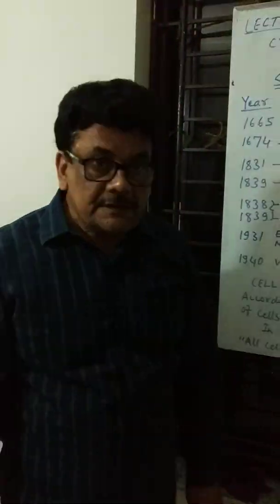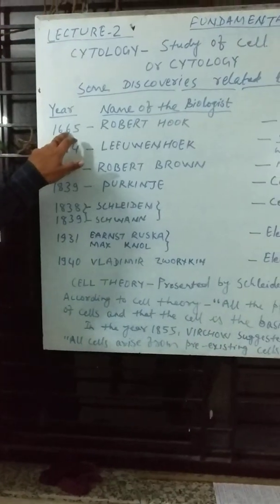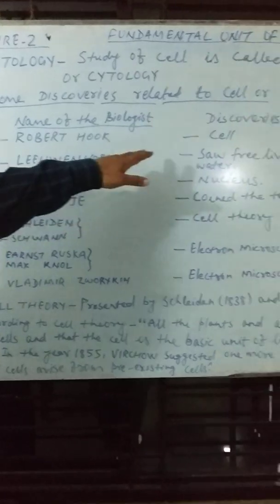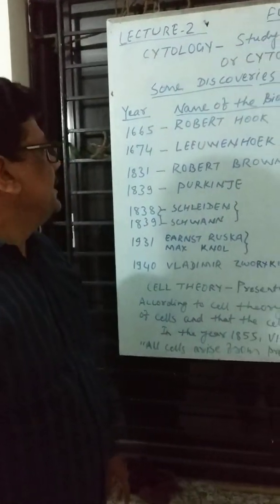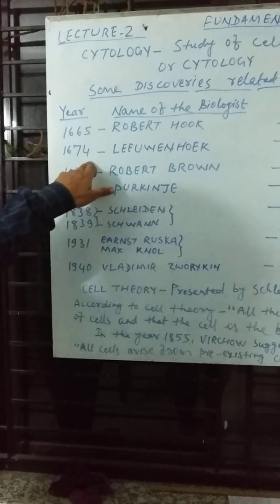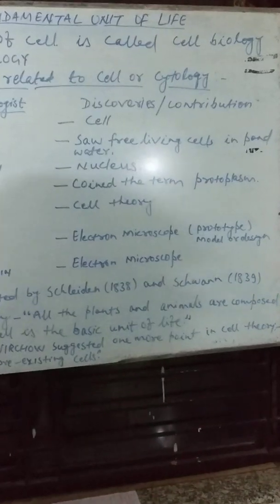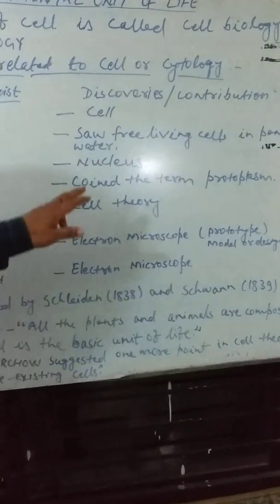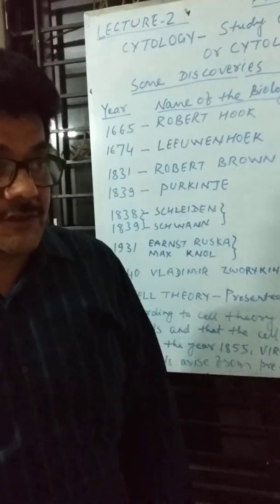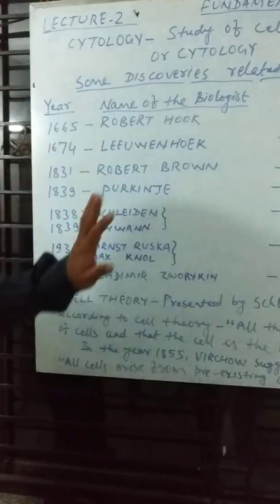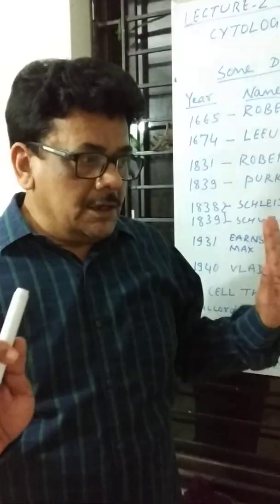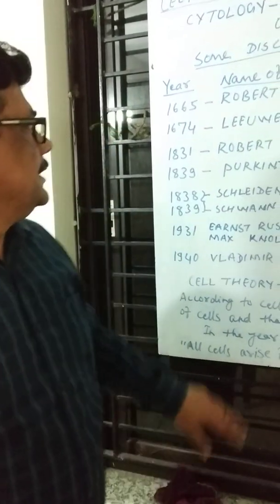Here we should learn some historical background of cytology or cell biology. In the year 1665, Robert Hooke discovered the cell — we have discussed this previously. In 1674, Leeuwenhoek, another biologist, first time saw living cells in pond water. Therefore, he is considered as the first microbiologist — Leeuwenhoek first time saw microorganisms in pond water.